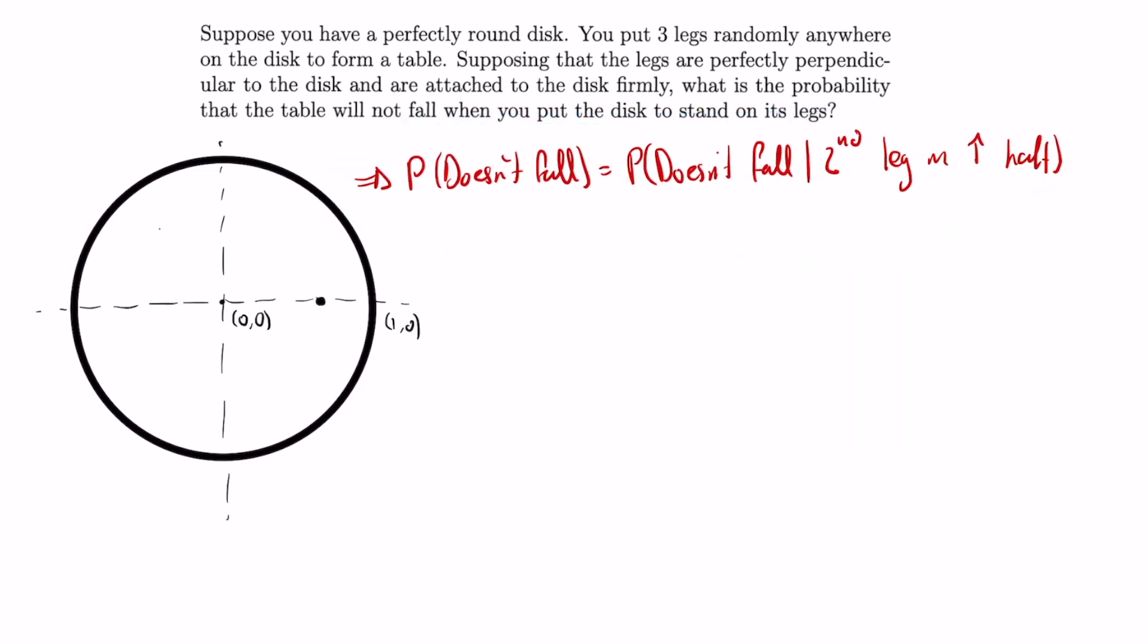To calculate this probability, let's draw the second leg on the upper half of the disc. By drawing a line through the second leg and the center of the disc, we can see that if we put the third leg anywhere in the shaded region, the center of the disc will be in the triangle spanned by the three legs, and the disc won't fall.